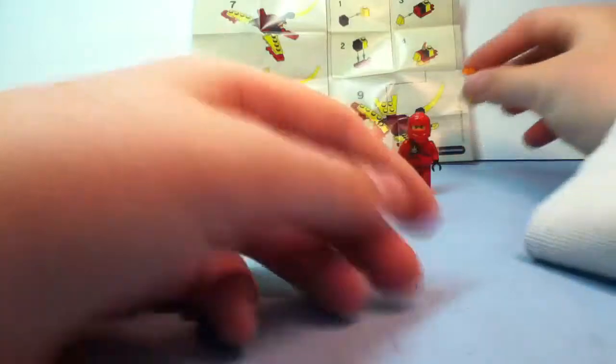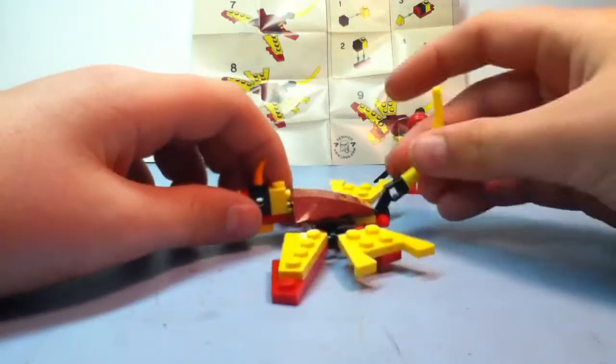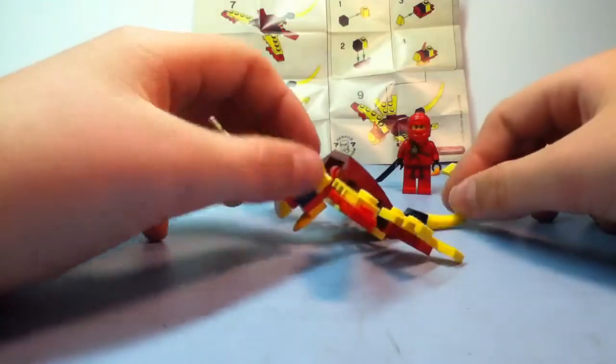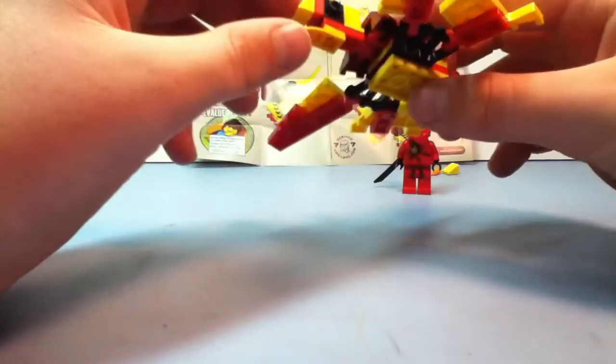Extra pieces are these, which is a cool horn piece and a slanted yellow piece. Pretty easy build. It took me two minutes and I was talking while I was doing that, so it's an okay set.